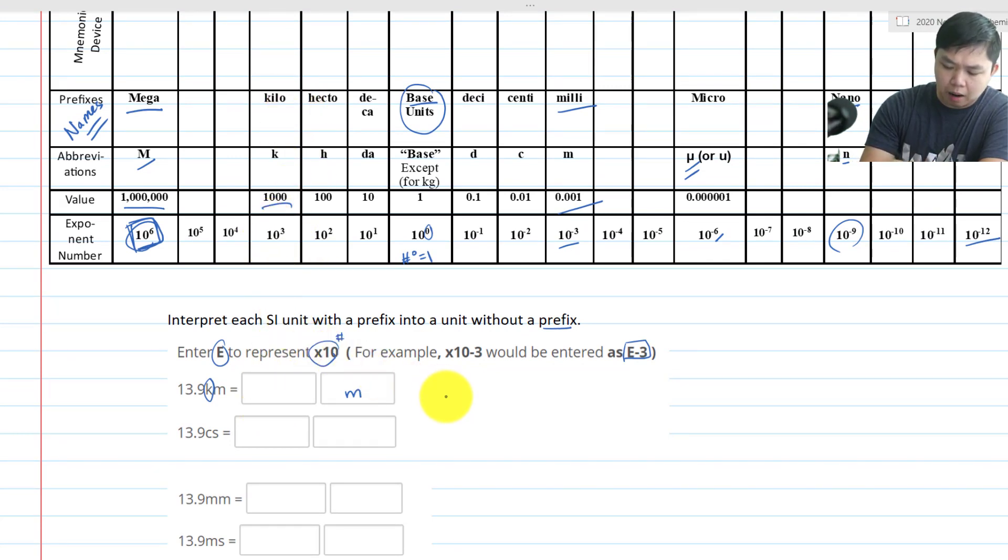So instead of writing times 10 to the third power, what we can do is 13.9 E to the what? 3. Now of course, this is equal to 13.9 times 10 to the third power.